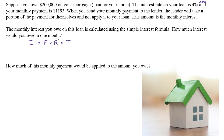We're looking for the amount of interest we have to pay in one month. The principal is the amount that we owe on the loan: $200,000. The rate is four percent per year, and we multiply that by one month, which is one-twelfth of a year. Remember, whatever the interest rate time frame is — in this case annual percentage rate — the time must also be in years. Those two units of measure have to match.